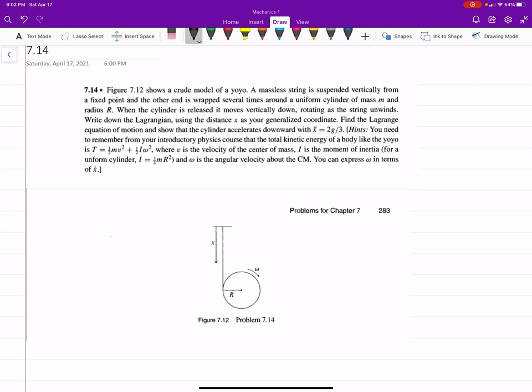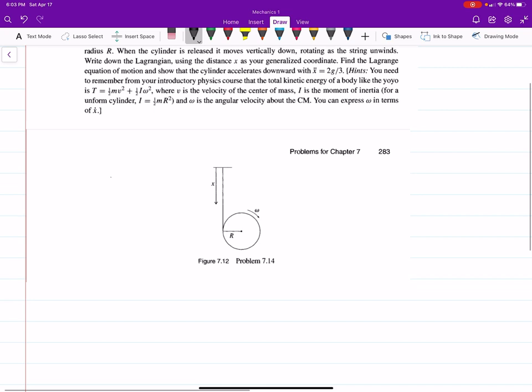So this is 7.14 out of the Taylor book, and it says the figure, which I have here, shows a model of a yo-yo. The massless string is suspended vertically from a fixed point, and the other end is wrapped several times around a uniform cylinder of mass m and radius R. When the cylinder is released, it moves vertically down, rotating as the string unwinds. It wants us to write down the Lagrangian and define the equations of motion and show the cylinder accelerates down at that amount.